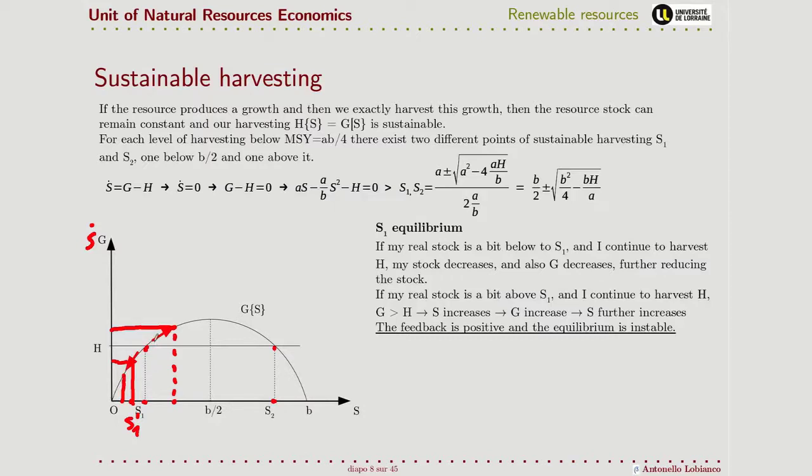Conversely, if my initial level of stock was a little bit higher, so it was S1 comma, this is how much the resource could generate, but I do harvest only here. So I harvest a little bit less than what the resource regenerates, and hence, in this case, the stock moves over the right, and more and more increases. So this equilibrium is not stable, because it is stable only if I harvest exactly the amount compatible with the stock level.